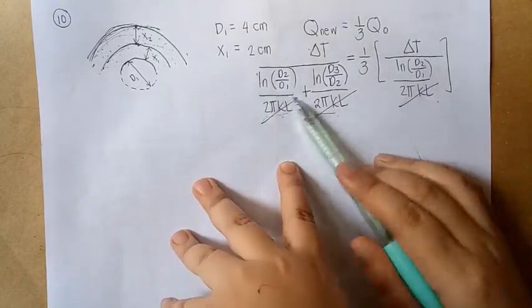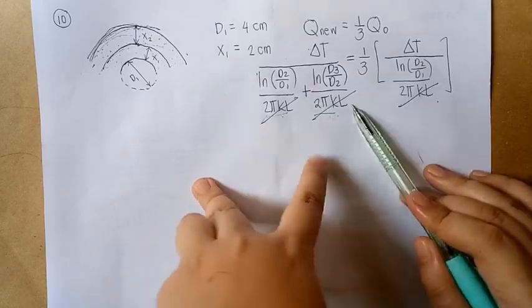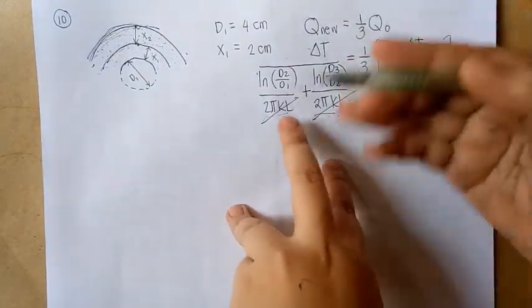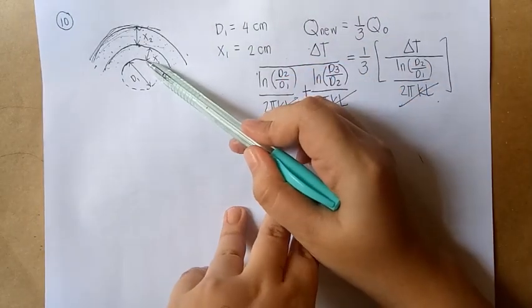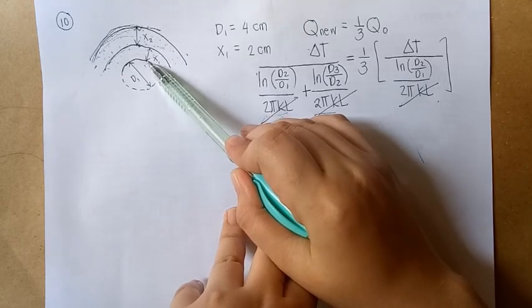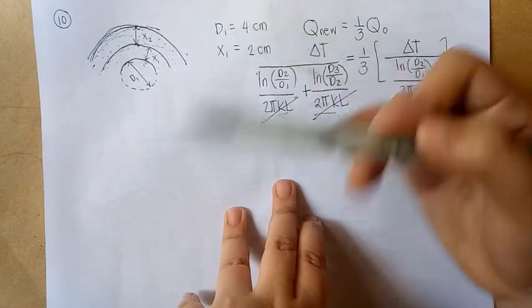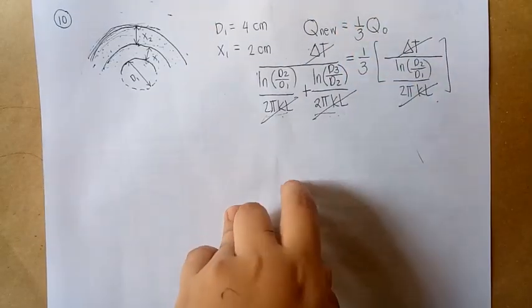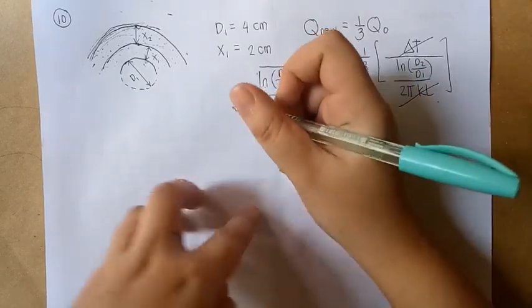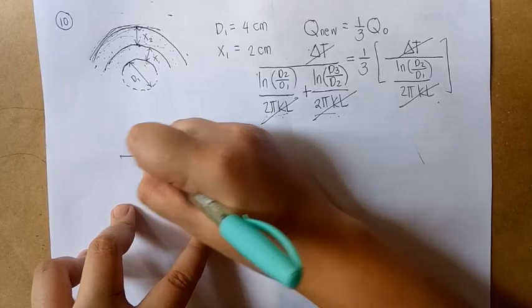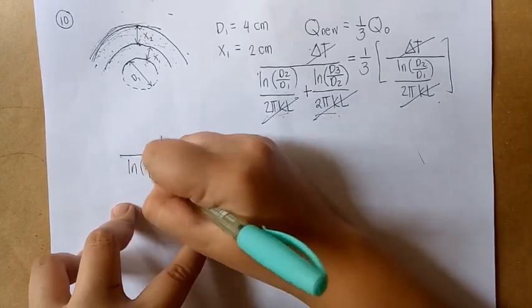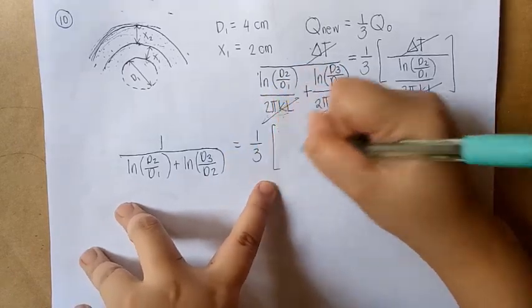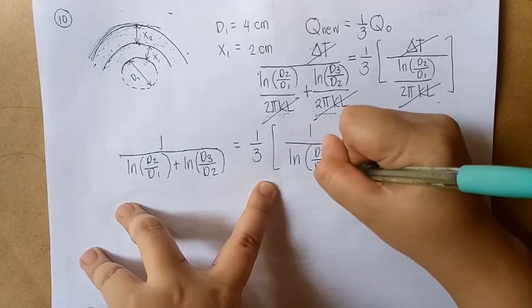The length cancels because we're wrapping one pipe, so the length is the same. Cancel 2π and thermal conductivity since it's the same material. Will delta T change? No, because the inside T1 won't change - it's still the same pipe and the problem doesn't mention any change. The ambient temperature outside also hasn't changed. So we cancel delta T. What remains is: 1 over ln(D2/D1) plus ln(D3/D2) equals one-third times 1 over ln(D2/D1).